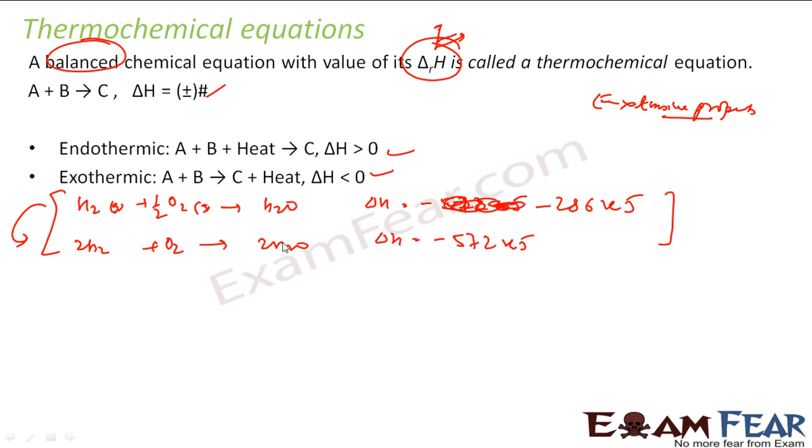If you reverse this reaction—from H2O liquid to hydrogen gas plus oxygen gas—the sign of enthalpy will change; it will become plus 286 kilojoules. When you flip it, the sign changes; when you double it, delta H doubles.